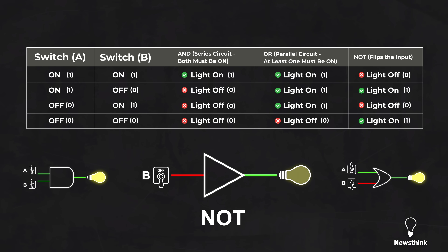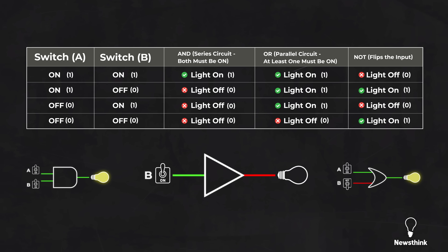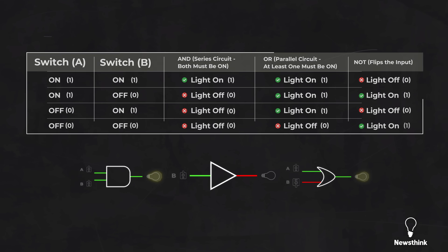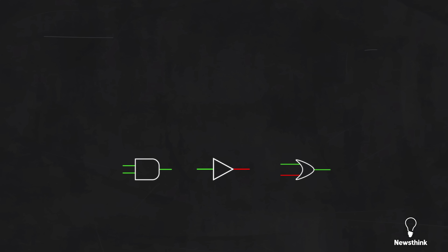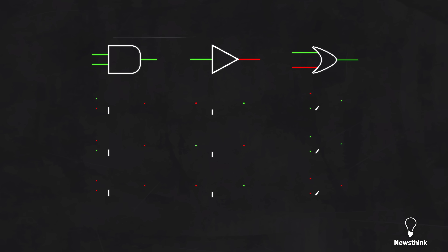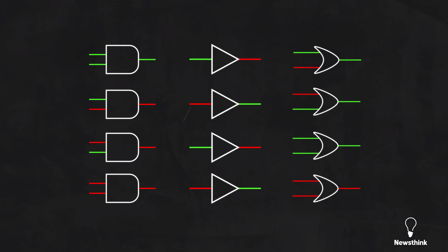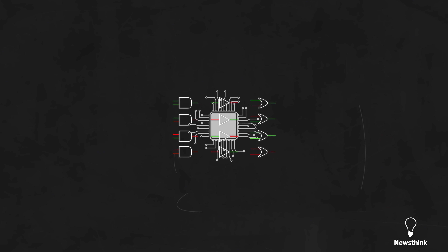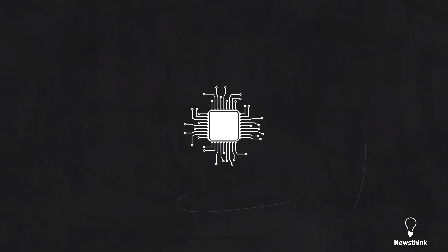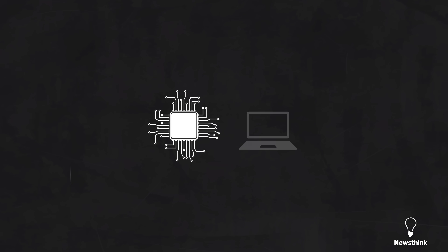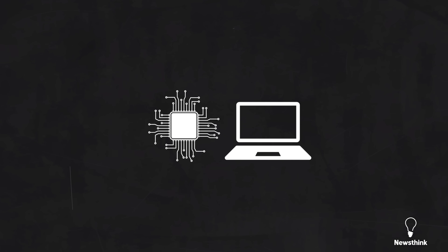If switch B is off, the NOT output is on. If switch B is on, the NOT output is off. AND, OR, and NOT are the fundamental building blocks of computers. By combining these basic logic gates in different ways, we can build complex circuits that perform calculations, store data, and execute instructions that form the core of modern computing.